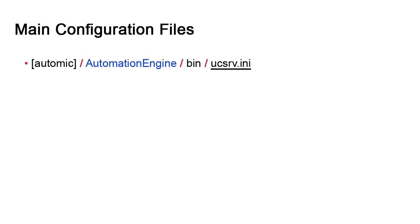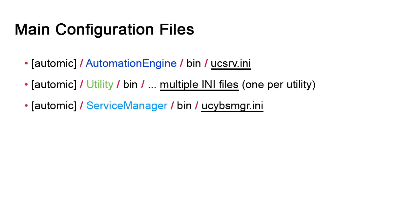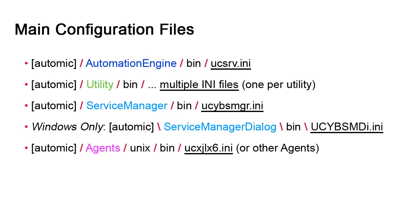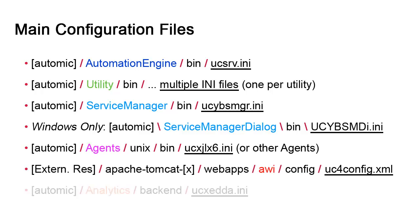This is the list of components, files, and file paths. Most of them are found in the Atomic Installation directory in the bin subdirectory. This includes the Automation Engine server components, utilities, service manager, service manager dialog, and agents. AWI is found under Tomcats, and the analytics file is found in the backend directory of analytics. Let's consider each of these. Note that most of the information we cover is fully explained in each file and in the documentation.